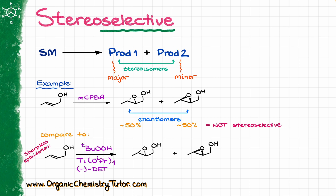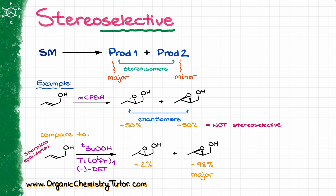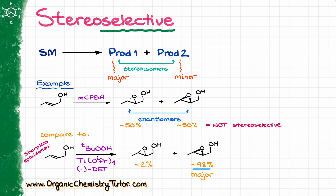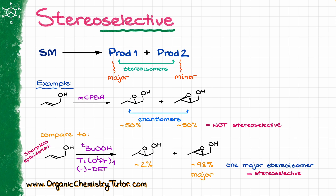However, if we compare that to Sharpless epoxidation, where I take the same starting material with a different combination of reagents, we make the same two products. But in this case, one of those products — the one on the right side — is going to be made in a staggering 98%, making it our major product compared to only 2% of the other possible product. Since one stereoisomer is now the major stereoisomer, we say this reaction is in fact stereoselective. So when one starting material gives you stereoisomers as products and one of those stereoisomers is the major product, we have a stereoselective reaction.